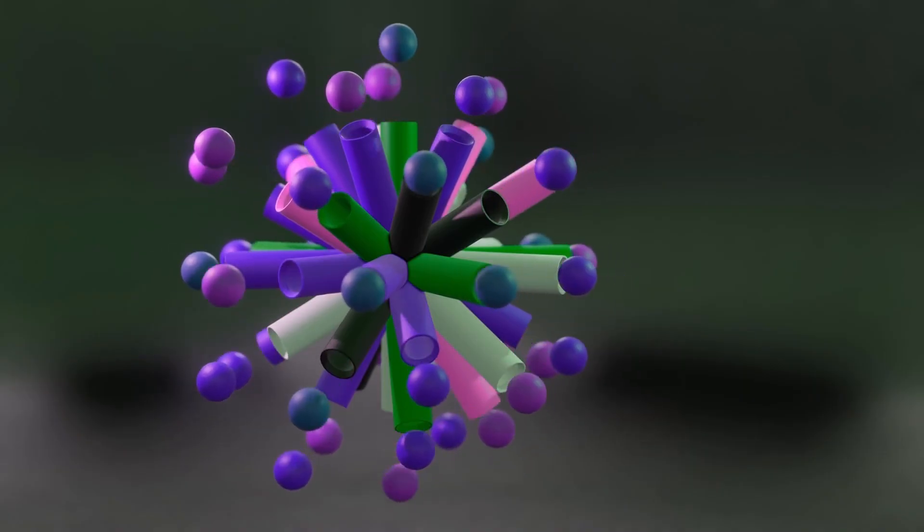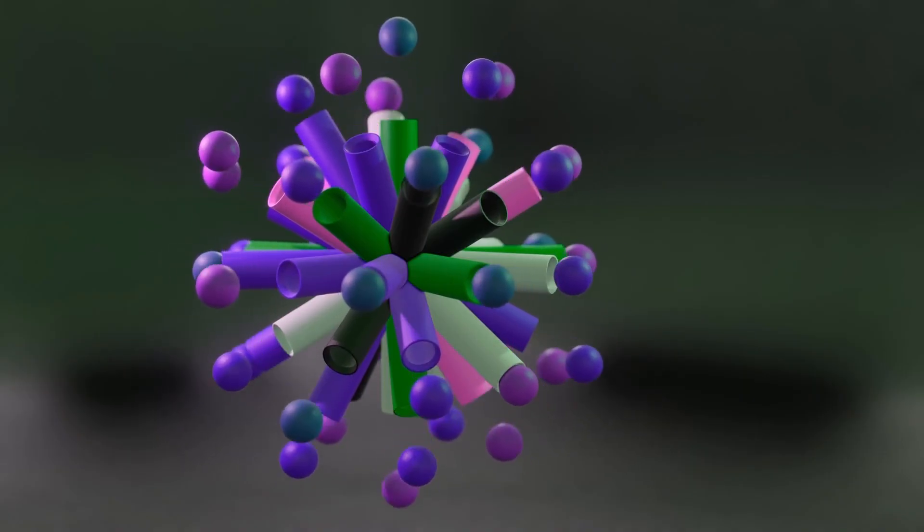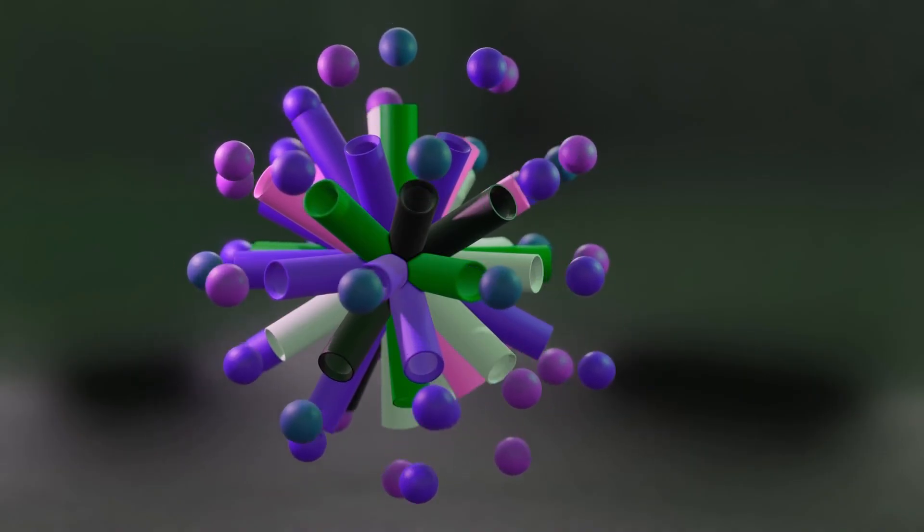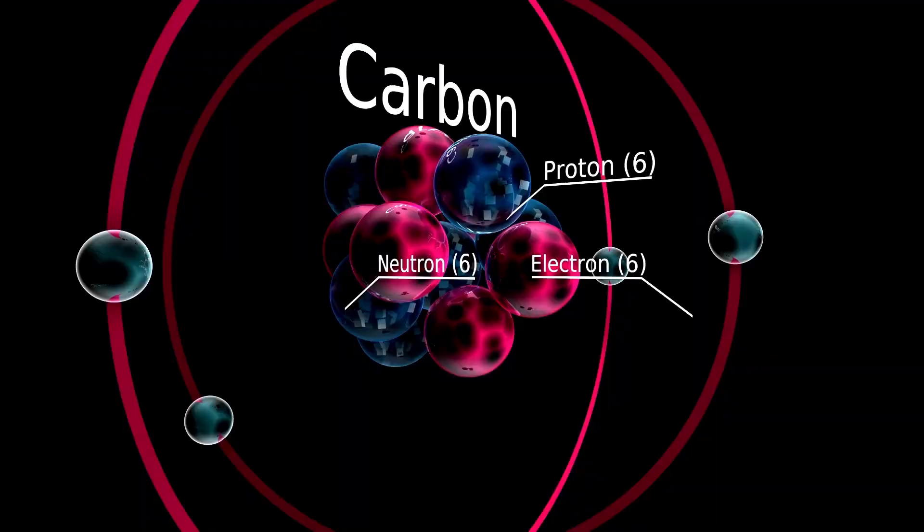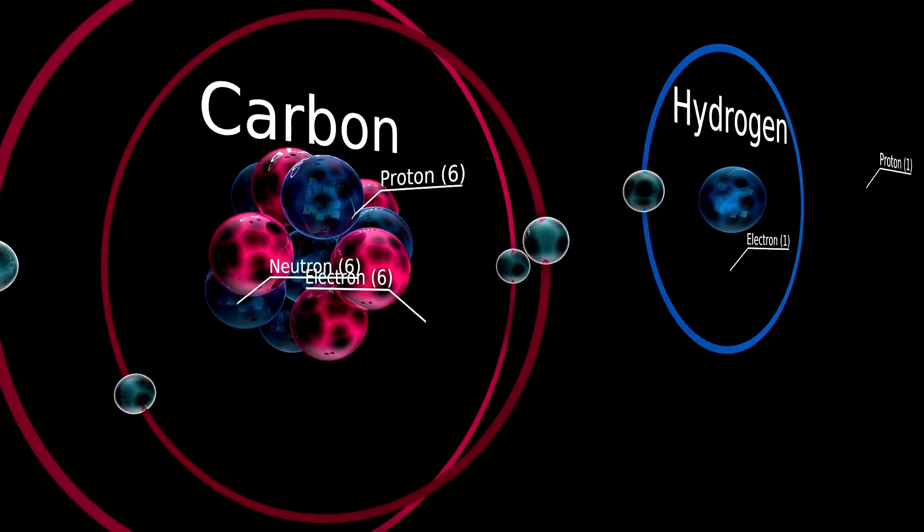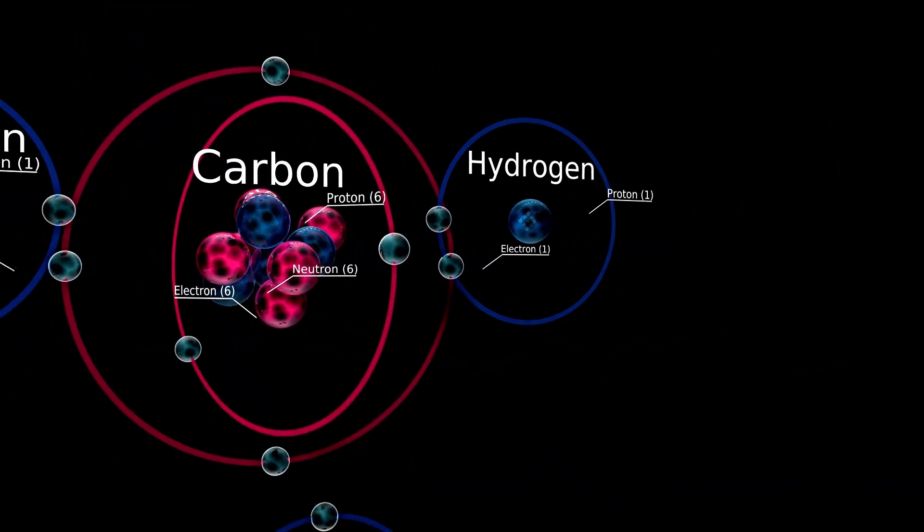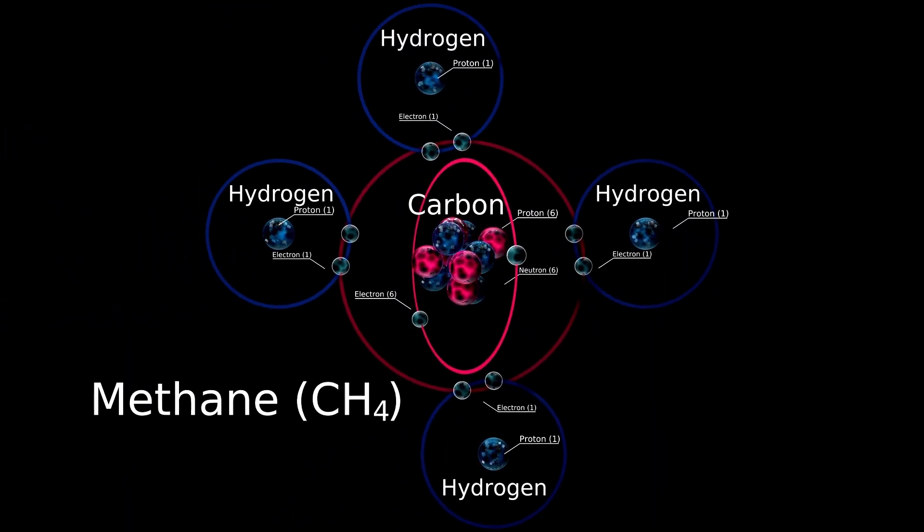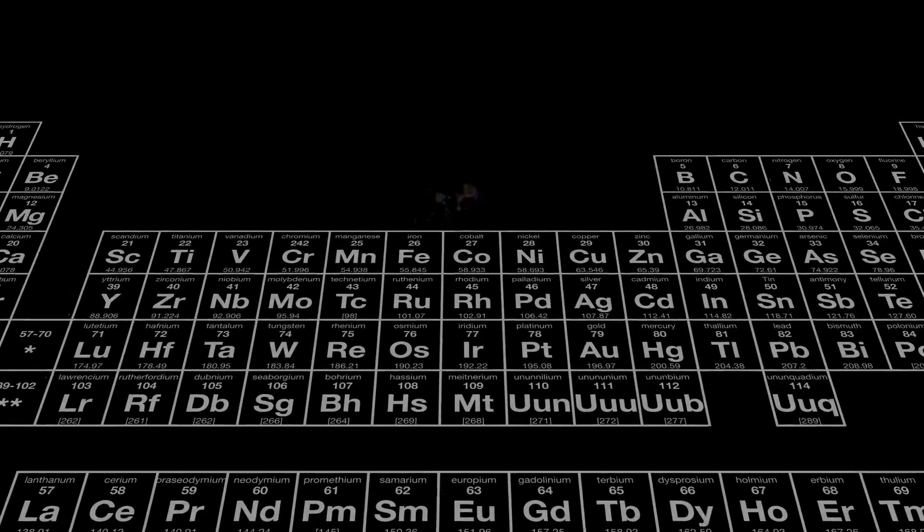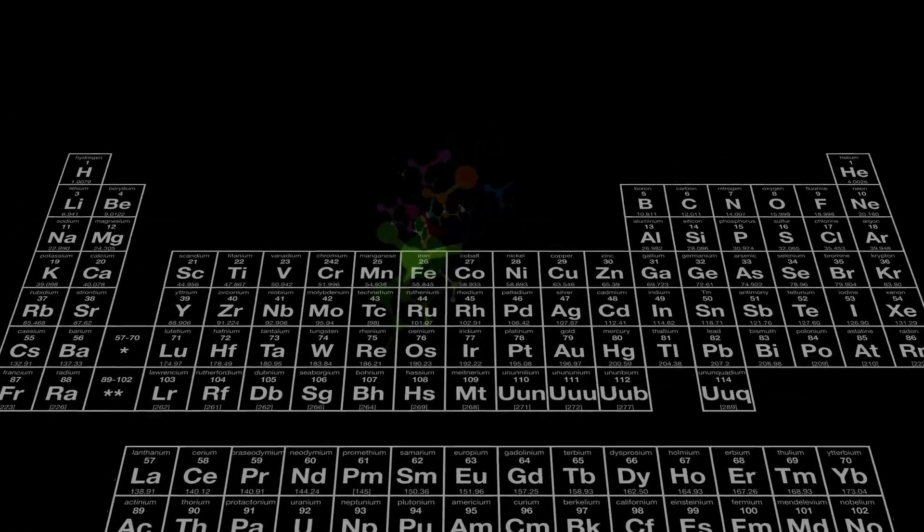This surge of light has effectively redefined the priorities of exoplanet science. No longer is the focus just on locating habitable zones or atmospheric composition. Now there is a new metric: technological activity. The search for technosignatures, once a niche field, has suddenly moved center stage. Urban illumination, power grid emissions, and industrial pollutants are no longer science fiction topics, but real phenomena we must learn to detect and interpret.